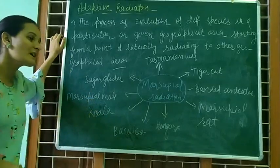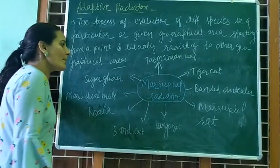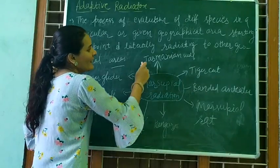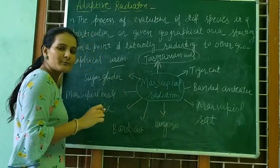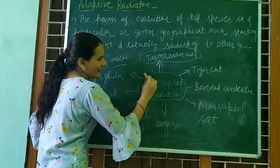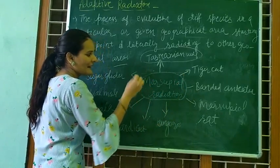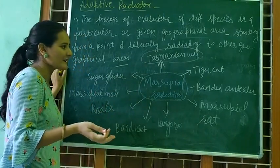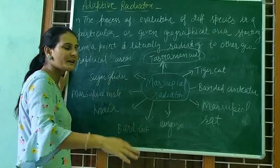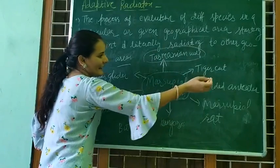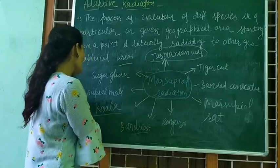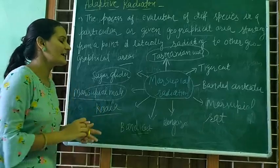If we talk about Adaptive Radiation, what was the process of Marsupial Radiation? In a given geographical area, there are different types of species. For example: tiger cat, banded anteater, marsupial rat, bandicoot, koala, marsupial mole, and sugar glider. All of these originated from one place.